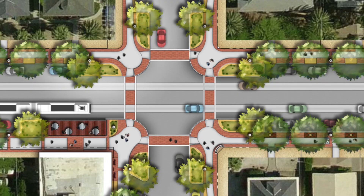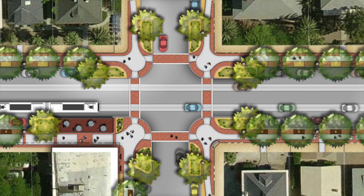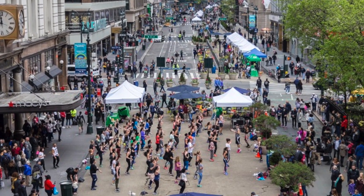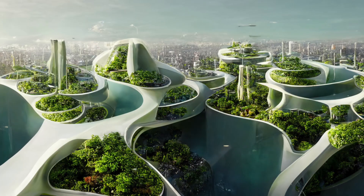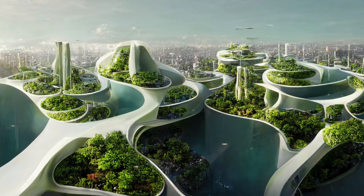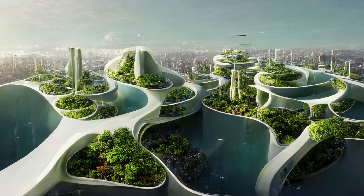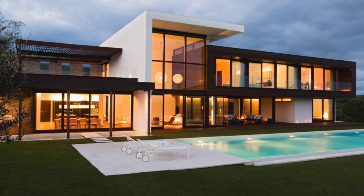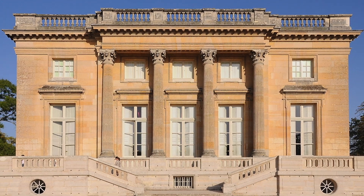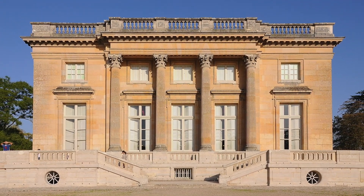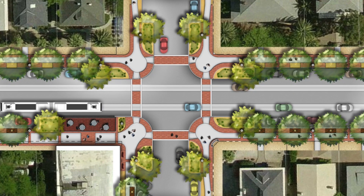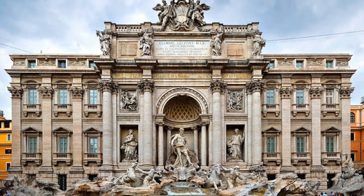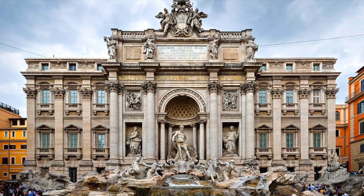An architect is a professional who designs buildings and structures, ensuring they are functional, safe, and aesthetically pleasing. Here's an overview of how an architect typically works. Initial consultation: an architect typically begins by meeting with a client to discuss their needs, budget, and preferences. The architect will take notes, ask questions, and review any available site plans or drawings.